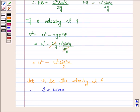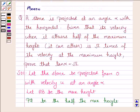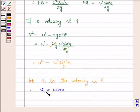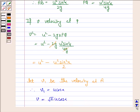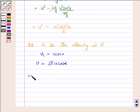We are given that the velocity when the stone attains half of the maximum height is root 2 times the velocity at the maximum height. So v equals root 2 times U cos alpha, which implies v squared equals 2U squared cos squared alpha.